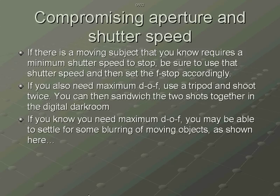If at the same time you also need maximum depth of field — that's what DOF stands for — use a tripod and shoot twice. In the first shot, set the shutter speed fast enough to freeze the object you need to freeze. In the second shot, once the subject has gone out of the scene, take another picture and stop down for maximum depth of field. Then in your image editor you can combine the two shots so the moving subject will be frozen and the scene will be sharp from close to the camera to far away.